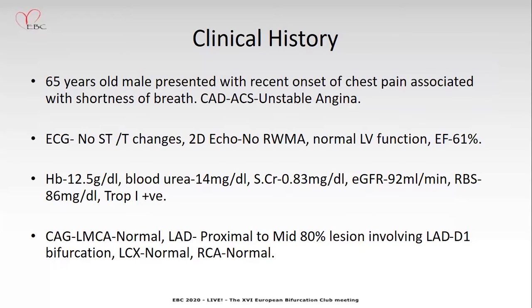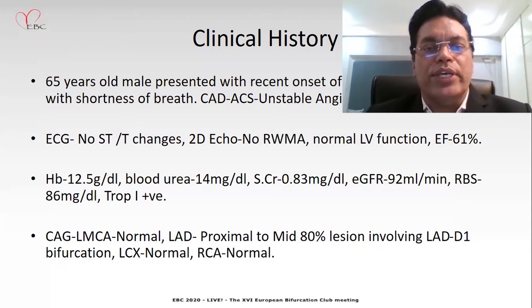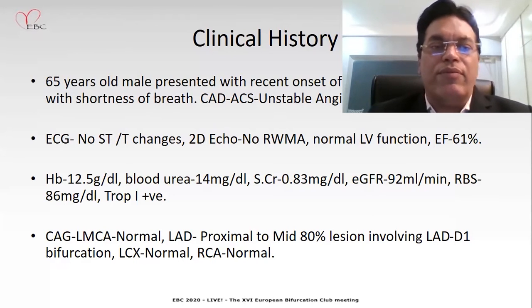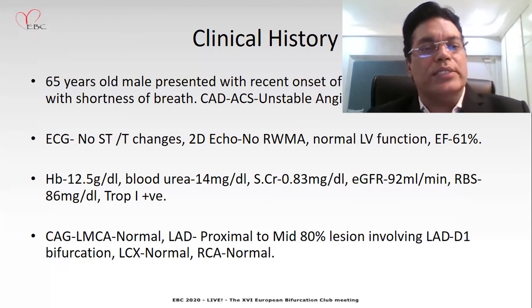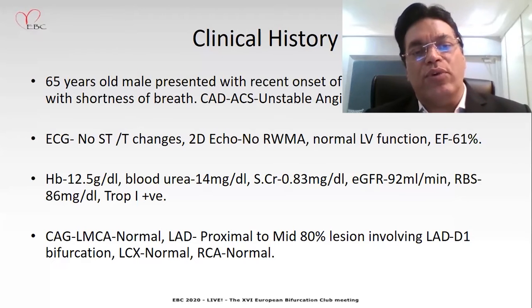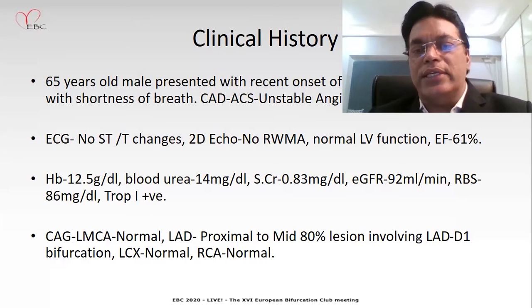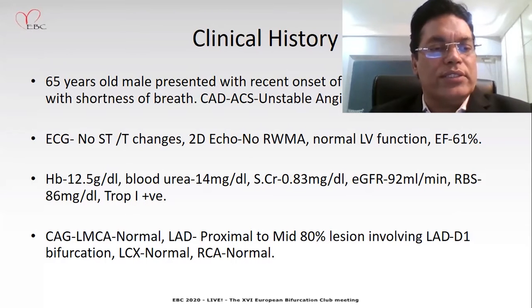This is a 65-year-old male presented with a recent onset of chest pain associated with shortness of breath, diagnosed as a case of unstable angina. ECG nothing significant, 2D echo no RWMA, good LV function. Hemoglobin 12.5 grams, blood urea 14 milligrams, serum creatinine 0.83, GFR 92 ml, RBS 86, and troponin positive.